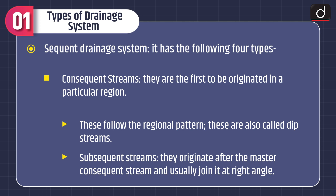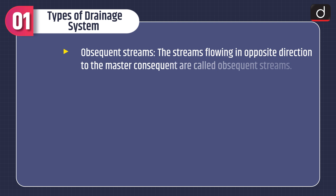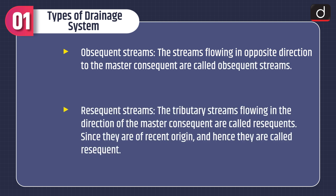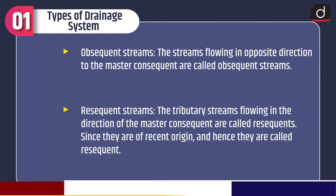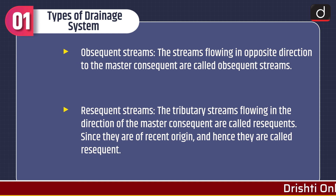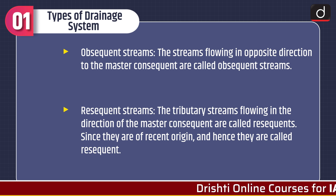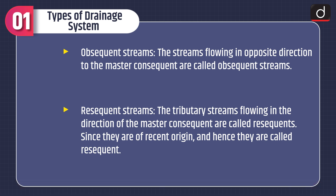Subsequent streams originate after the master consequent stream and usually join it at right angles. Obsequent streams are those flowing in the opposite direction to the master consequent. Resequent streams are tributary streams flowing in the direction of the master consequent; since they are of recent origin, they are called resequent.